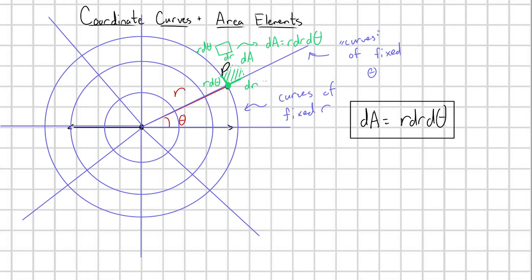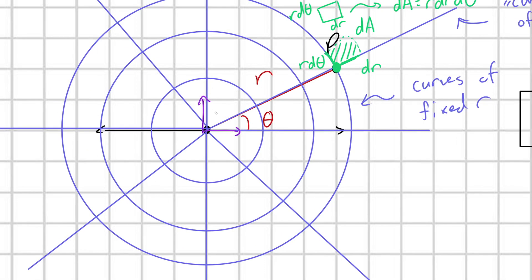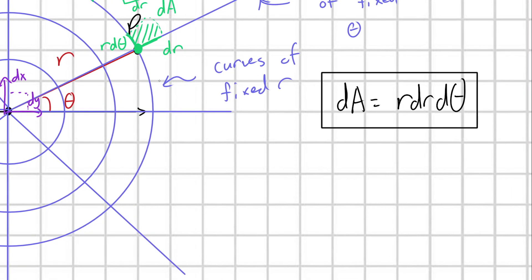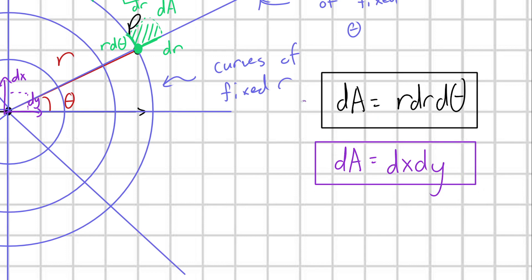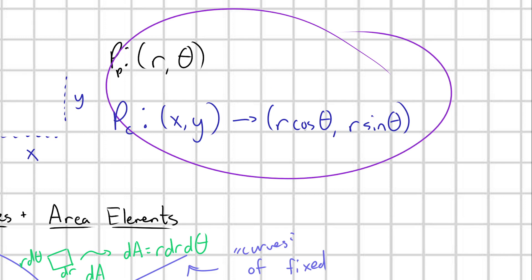Before moving on, the last thing I'll do is make another reference to Cartesian coordinates. In Cartesian coordinates, the area element: we imagine varying x by some amount and varying y by some amount, and we get a square that looks like this — dx, dy. We would very trivially find that the area element dA in Cartesian coordinates is equal to dx dy. Now a kind of interesting question here is whether these area elements between the two coordinate systems can be related, just like how we were able to relate points between the two coordinate systems.